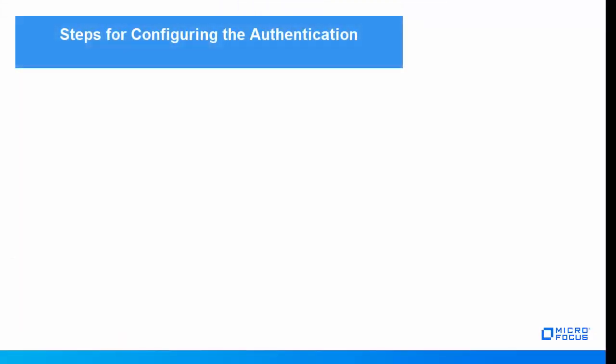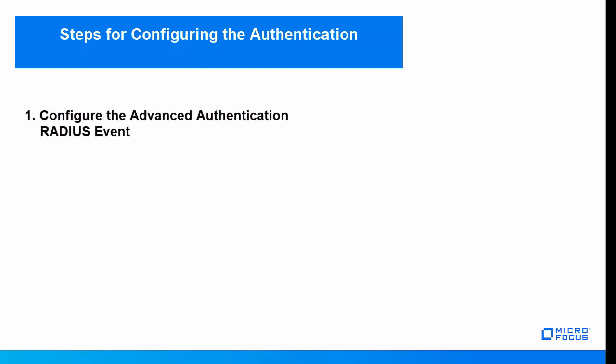To configure the Advanced Authentication integration with OpenVPN, you must perform the following configurations: configure the Advanced Authentication RADIUS event on the Advanced Authentication Administration portal.